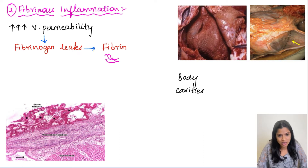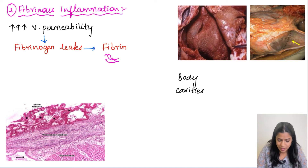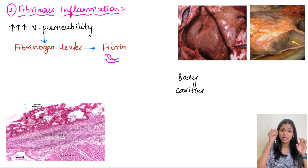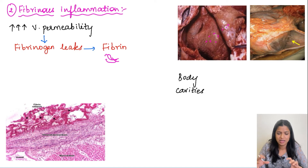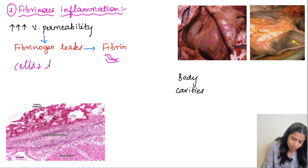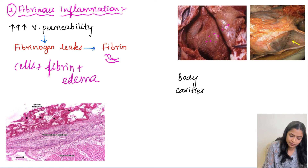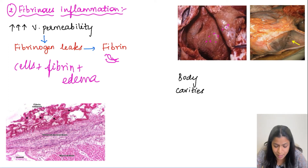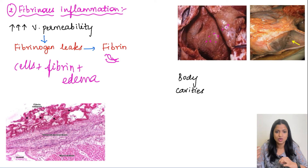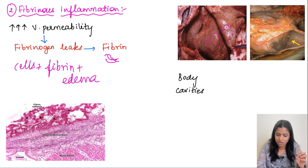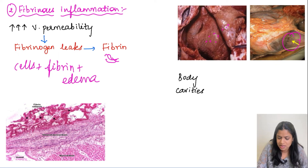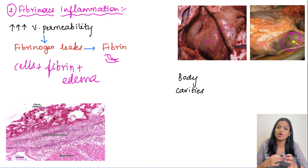Fibrinous inflammation can happen in body cavities, and the best example is fibrinous pericarditis. The first image shows fibrinous pericarditis with a brownish granular appearance, because there is edema fluid along with inflammatory cells and fibrin present. When this fibrinous inflammation is not resolved, it can cause chronic inflammation and fibrosis between the layers of the pericardium, forming adhesion bands. In the second image, bands of fibrosis are seen in the pericardial cavity, compressing and obliterating the pericardial space.